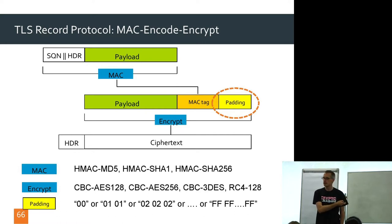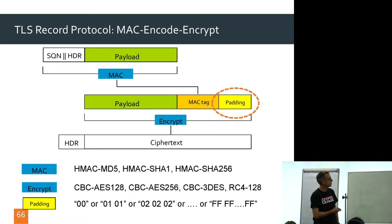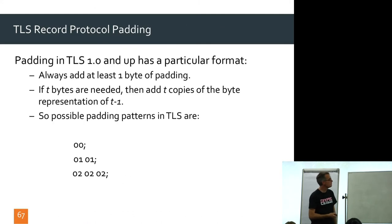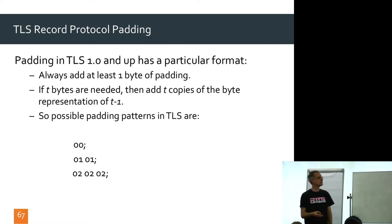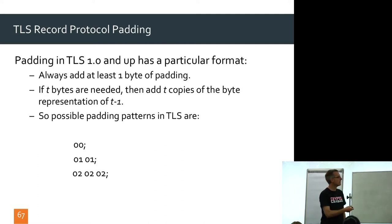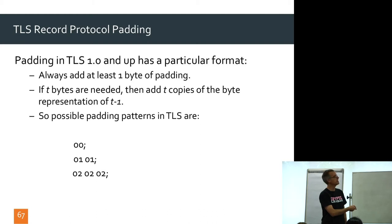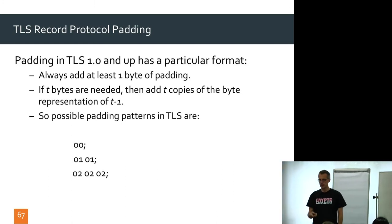Any questions before we go on? So in TLS 1.0 and up, the padding always has a particular format. In SSL 3.0, there was no requirement on the padding format — it was only that the last byte should tell you how much padding there is. So a value of 01 would mean two bytes of padding, and in SSL 3.0 you didn't check the other bytes.